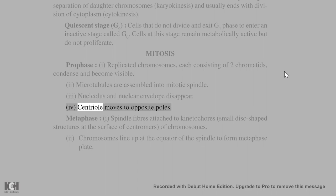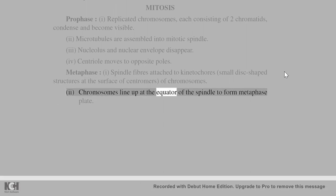(4) Centriole moves to opposite poles. Metaphase: (1) Spindle fibers attach to kinetochores - small disc-shaped structures at the surface of centromeres of chromosomes. (2) Chromosomes line up at the equator of the spindle to form metaphase plate.